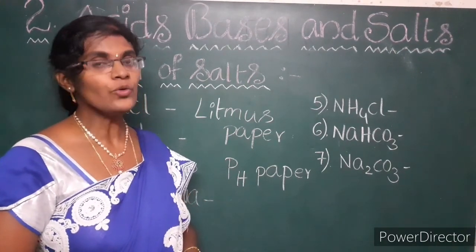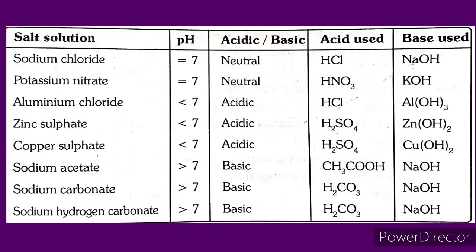Record your observations in a table. Sodium chloride has a pH of 7 and is formed from hydrochloric acid and sodium hydroxide — its nature is neutral, meaning neither acidic nor basic. Aluminium chloride has a pH of less than 7, formed from hydrochloric acid and aluminium hydroxide — its nature is acidic. Sodium acetate has a pH of greater than 7, formed from acetic acid and sodium hydroxide — its nature is basic.